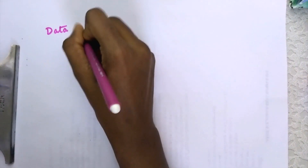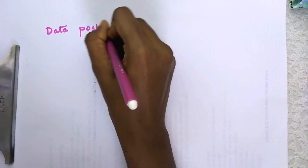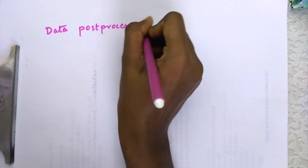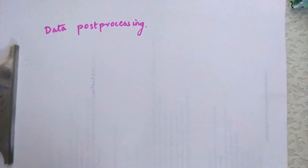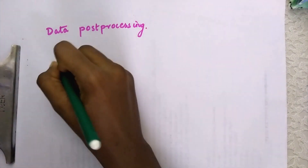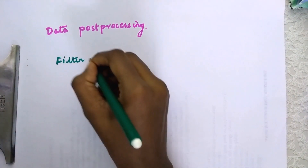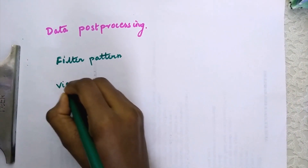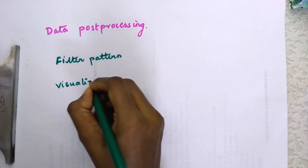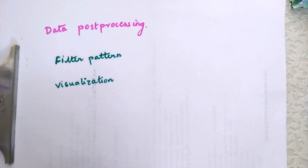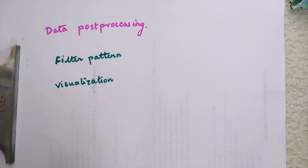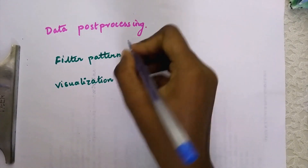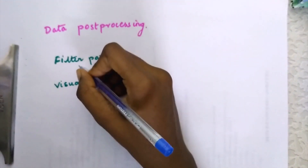Now I will explain data post-processing. Data post-processing includes only two steps: filter pattern and visualization. We are going to visualize the data.